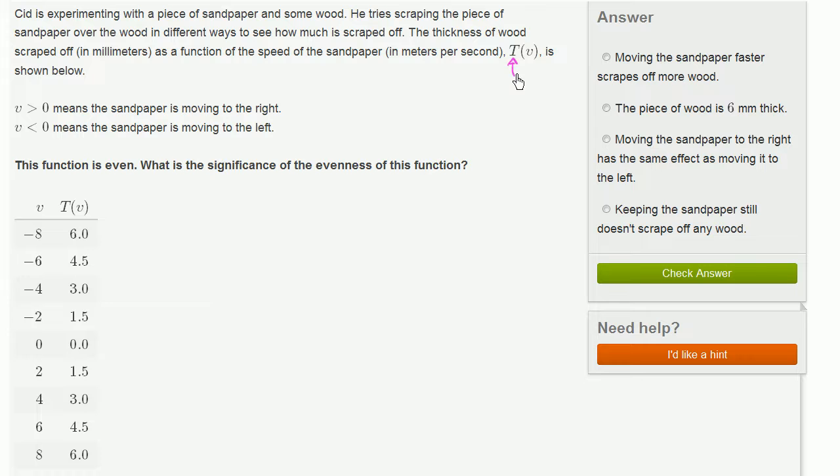So this is the thickness scraped off, or how much is scraped off. And it is a function of speed. And actually, since they're using v and also they're getting negative values, we care about the direction. I'll even call that, it's actually the velocity. So this is how much is scraped off as a function of velocity. It's shown below.